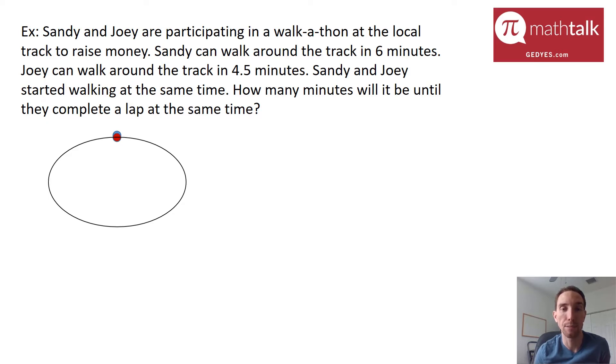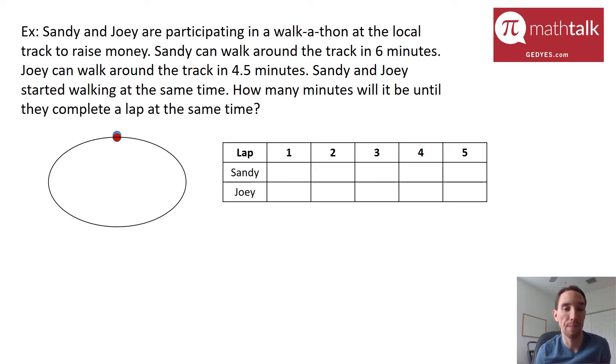It's not necessarily the greatest, but it gives you some idea of what's happening. We have these two people going in laps at different times, but at some point they're going to finish at the same time. Really what we're looking at is multiples of two different numbers. We can visualize this and solve it using a chart. We have Sandy and Joey and different laps, and we're going to fill it out with how many minutes have elapsed after each lap. We're going to look for when the two values are the same.